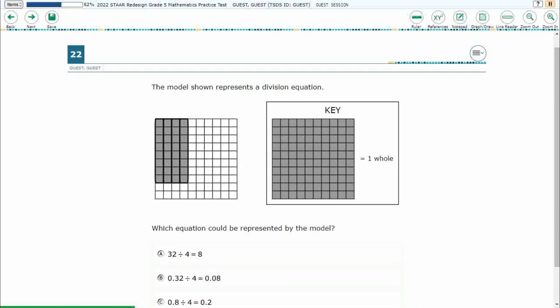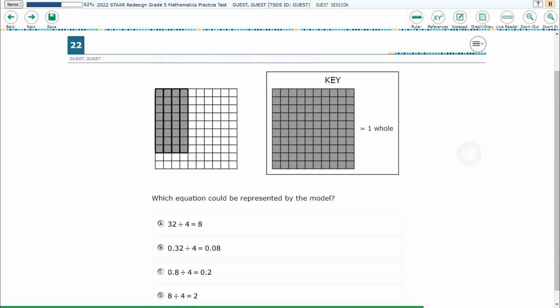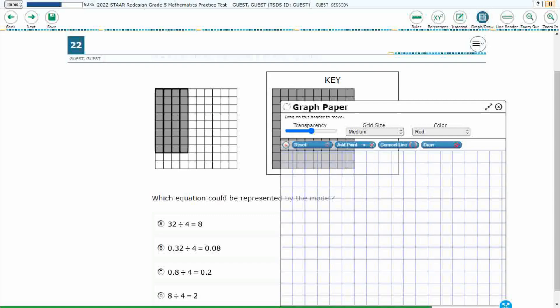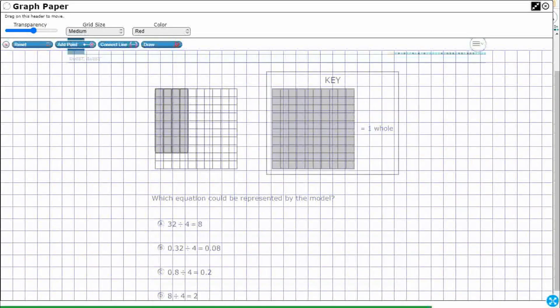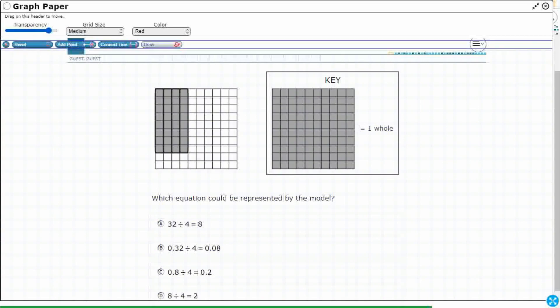So we have this model here and it represents a division equation. Now it can be a little bit confusing here. Let's open up our graph draw feature. You've got these two different models right next to each other, but they do give you the fact that this is a key. So we're not looking at this. This is where we need to be looking. Let's get our eyes right over here on that model. We're really not looking at the key except to interpret what this model is, but since they're next to each other I see how it can be confusing.